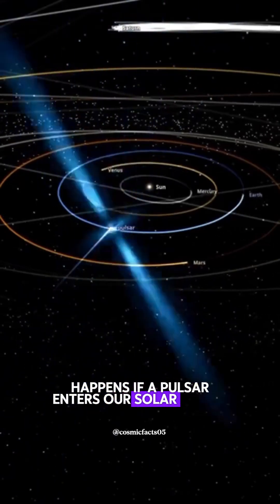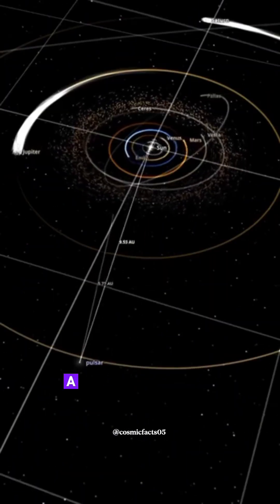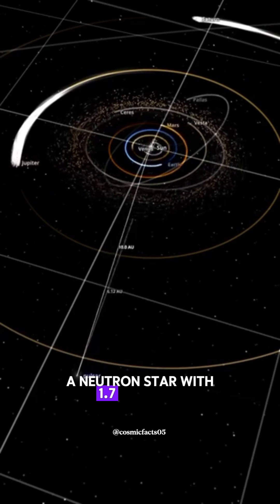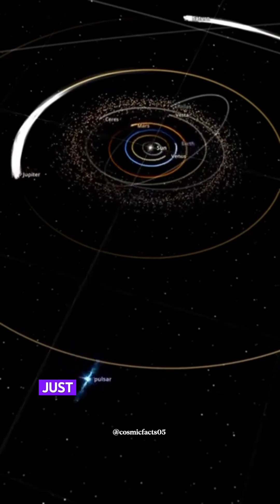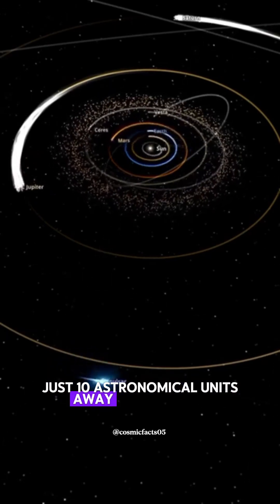What happens if a pulsar enters our solar system? Let's place a pulsar, a neutron star with 1.7 times the mass of our sun, just 10 astronomical units away from the sun.